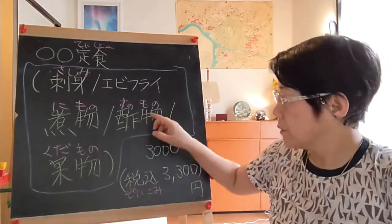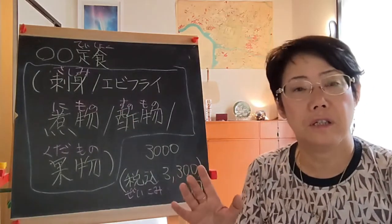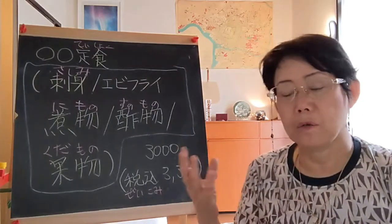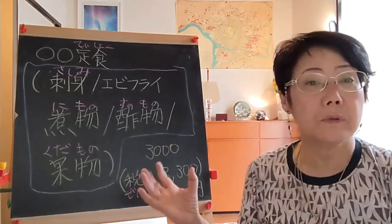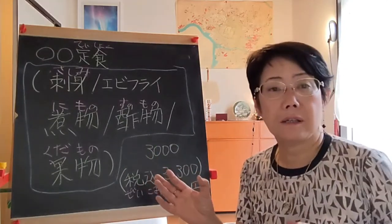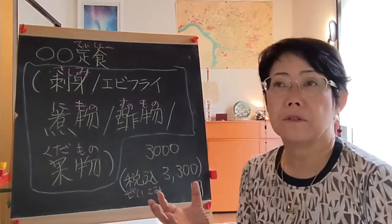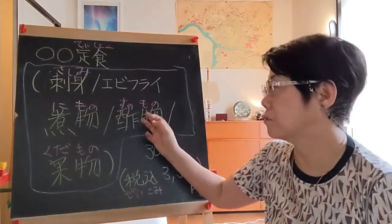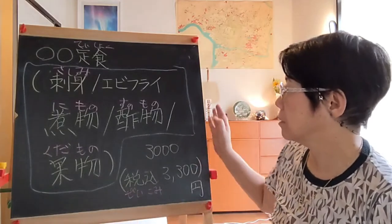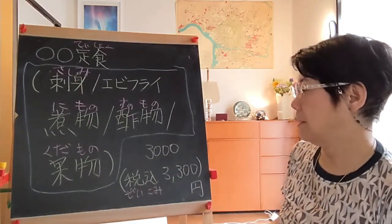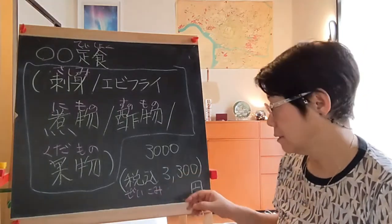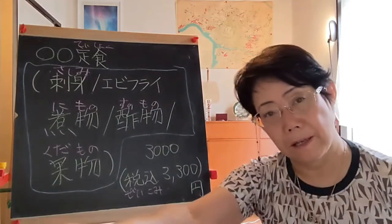Next is sunomono: su (酢) means vinegar, so sunomono is food cooked with vinegar — usually cold. For example, kiuri no sunomono is cucumber with vinegar. Kudamono is fruit. The total is 3,000 yen, and with 10% tax included — zei komi — it comes to 3,300 yen.